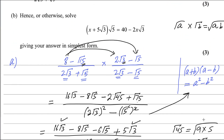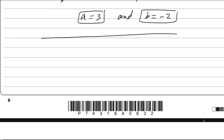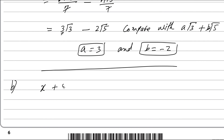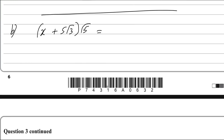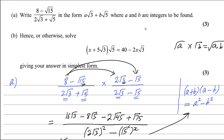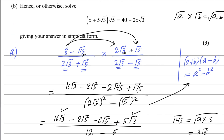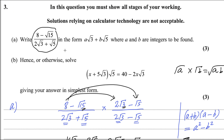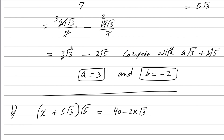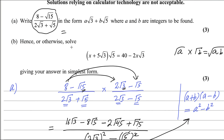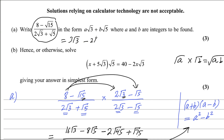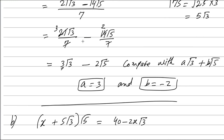Now for the second part: solve x plus 5 square root 3 times x plus square root 5 equals 40 minus 2x square root 3. We need to find the value of x. We can use the result from the first part, which gave us 3 square root 3 minus 2 square root 5, and this will help in solving the next question.